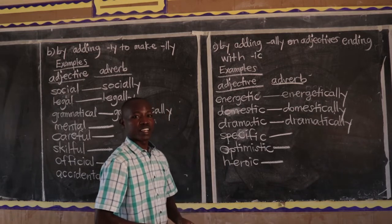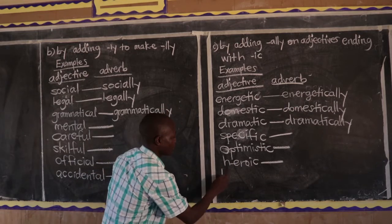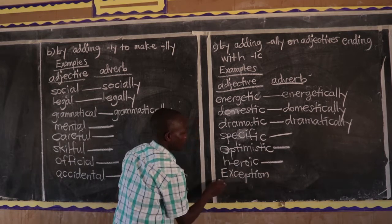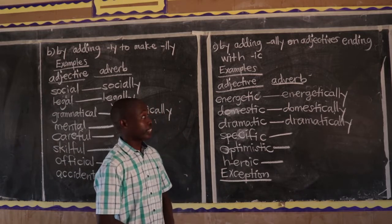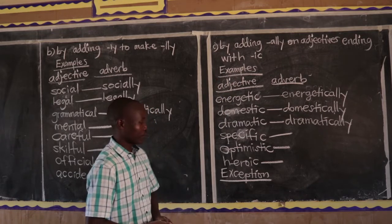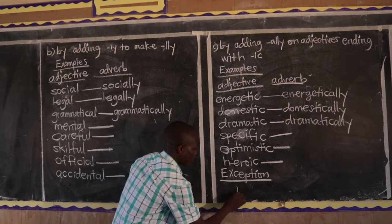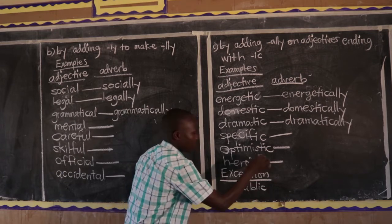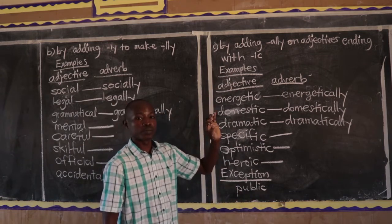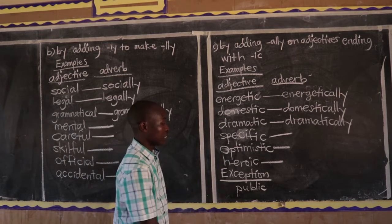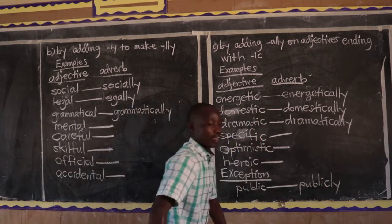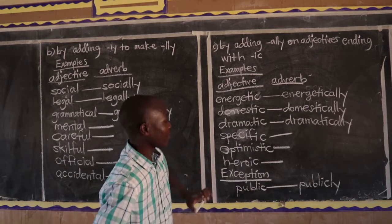However, there is something you should note — an exception. Even though the rule says adjectives ending with -IC add -ALLY, we have one unique adjective: the word 'public'. This word is an exception — if you are forming the adverb, you do not follow this rule. So 'public' gives you 'publicly', ending in -LY, not -ALLY. That is why I am calling it an exception.